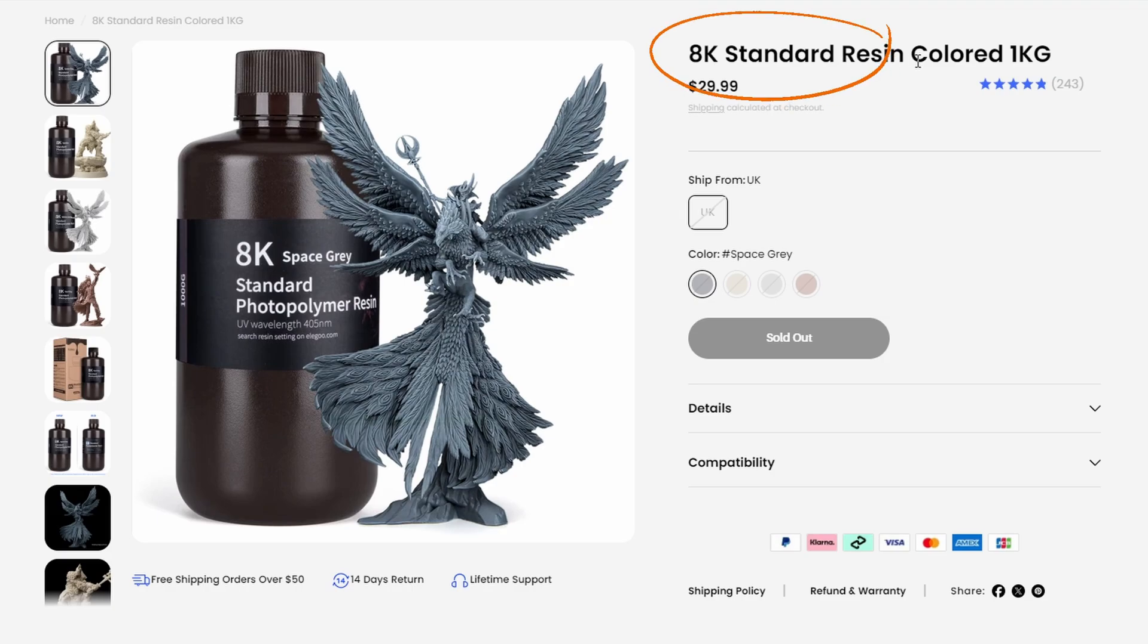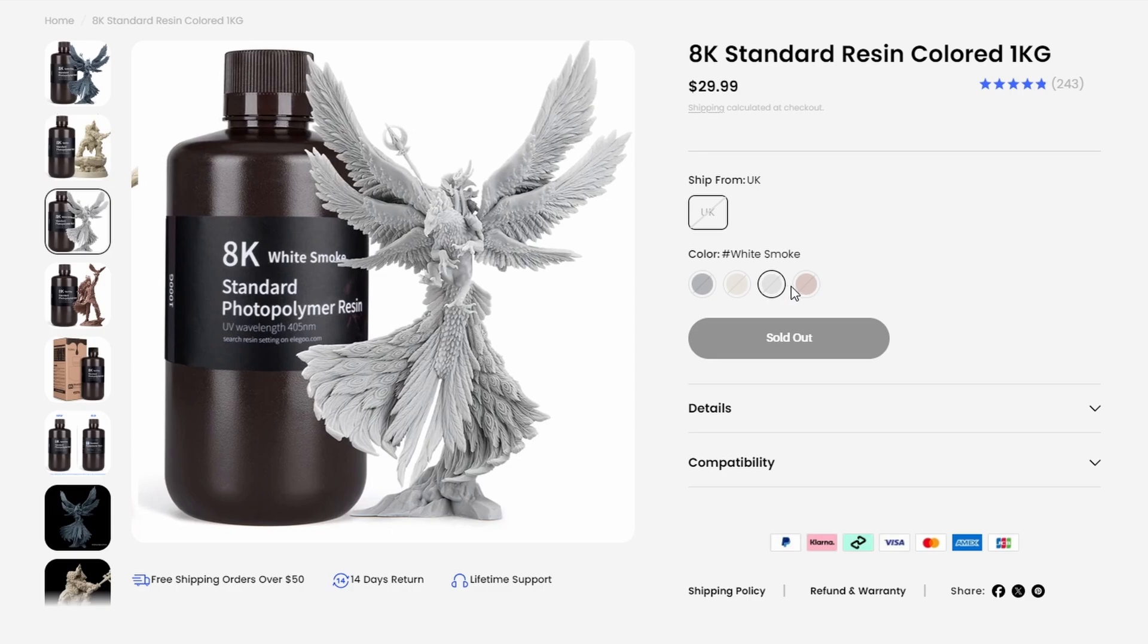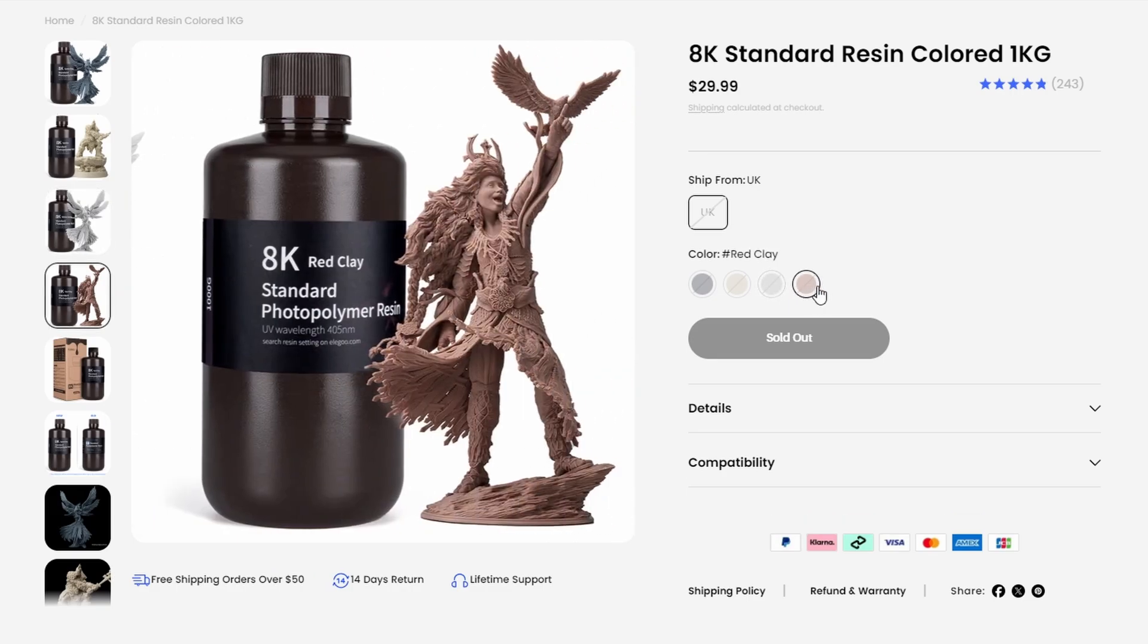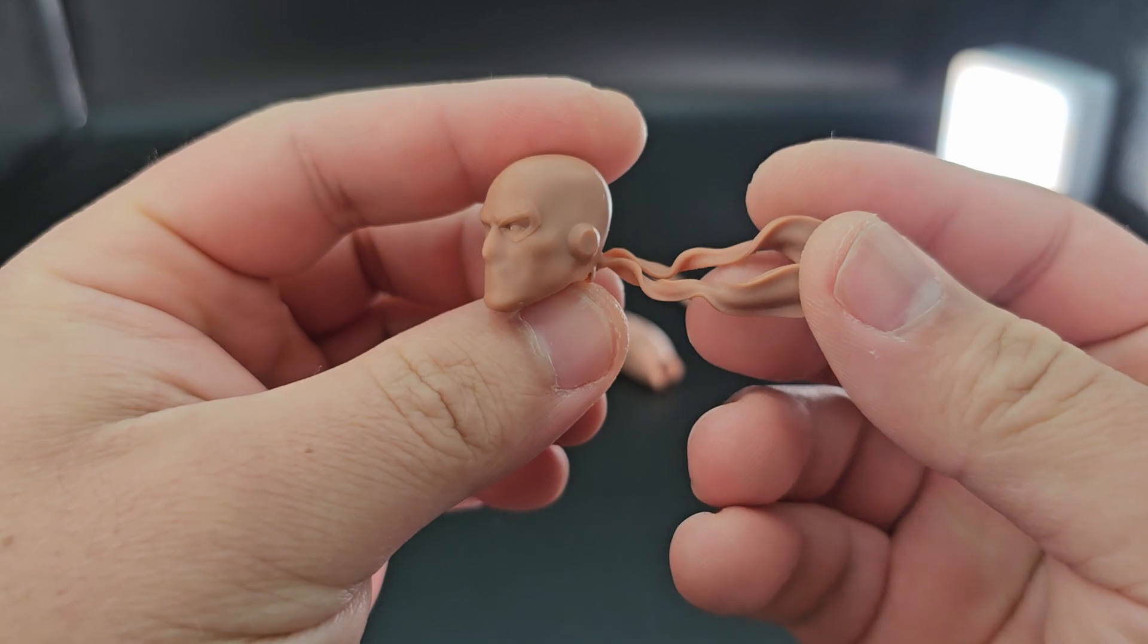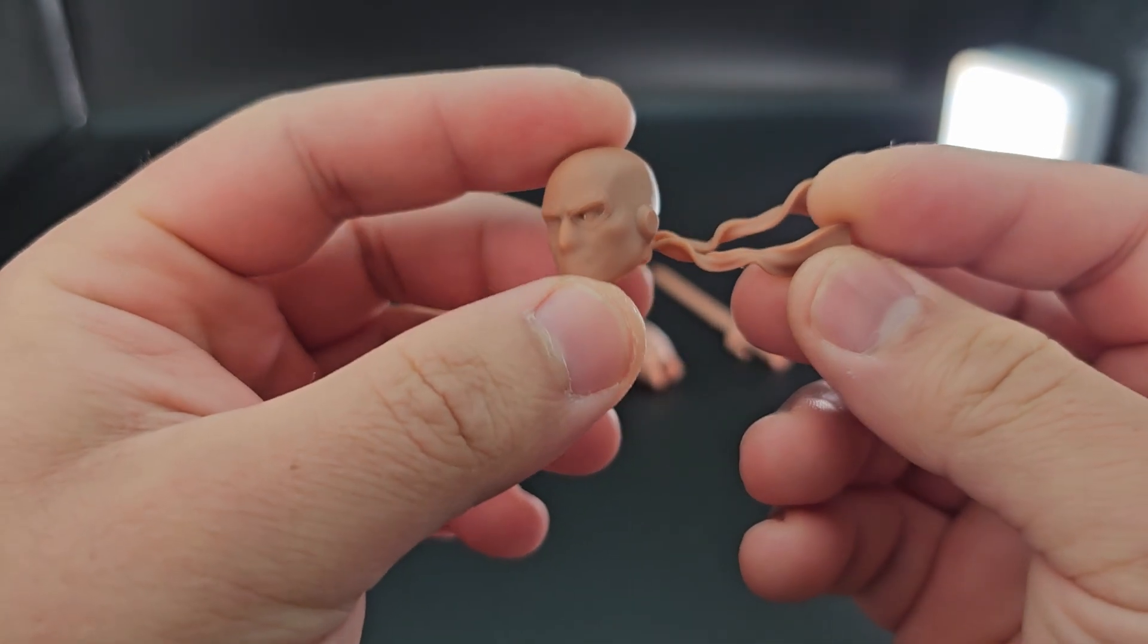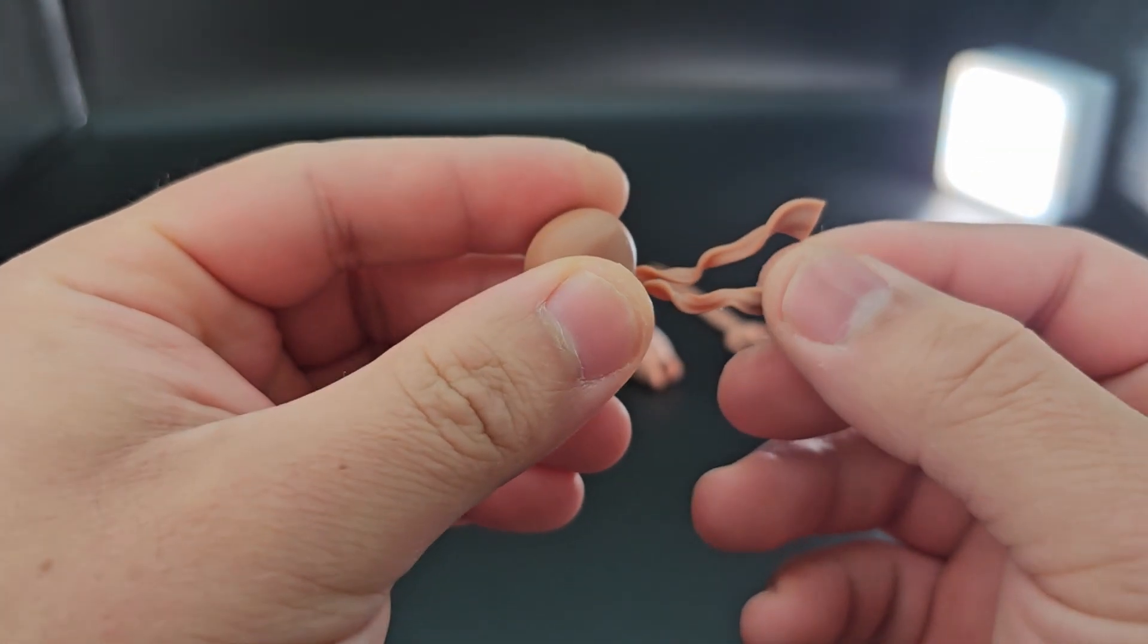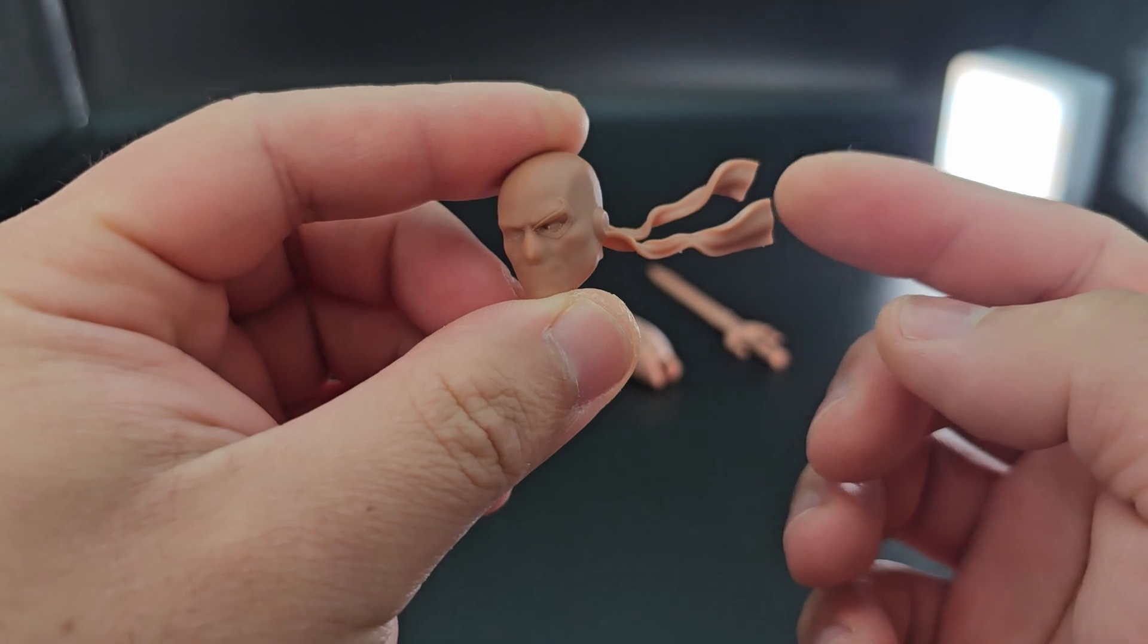First, we will look at the Elegoo 8K resin. The resin is priced at a reasonable $29.99, and Elegoo will consistently provide discounts on their resins, so more times than not you'll get a discounted price. There are a variety of available colors for this resin to choose from, namely the space gray, vanilla white, smoke, and the one we're looking at in today's video, the red clay.